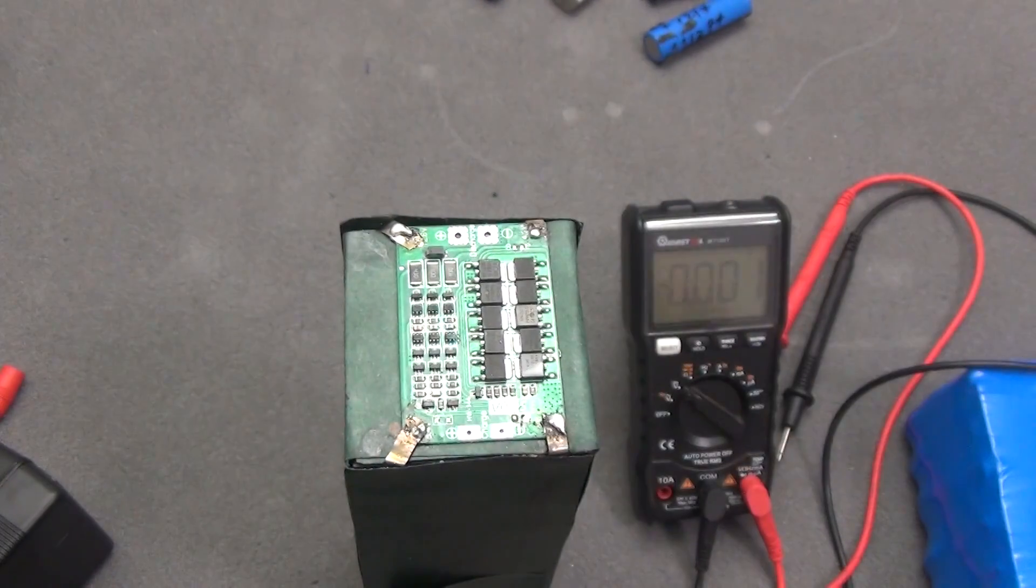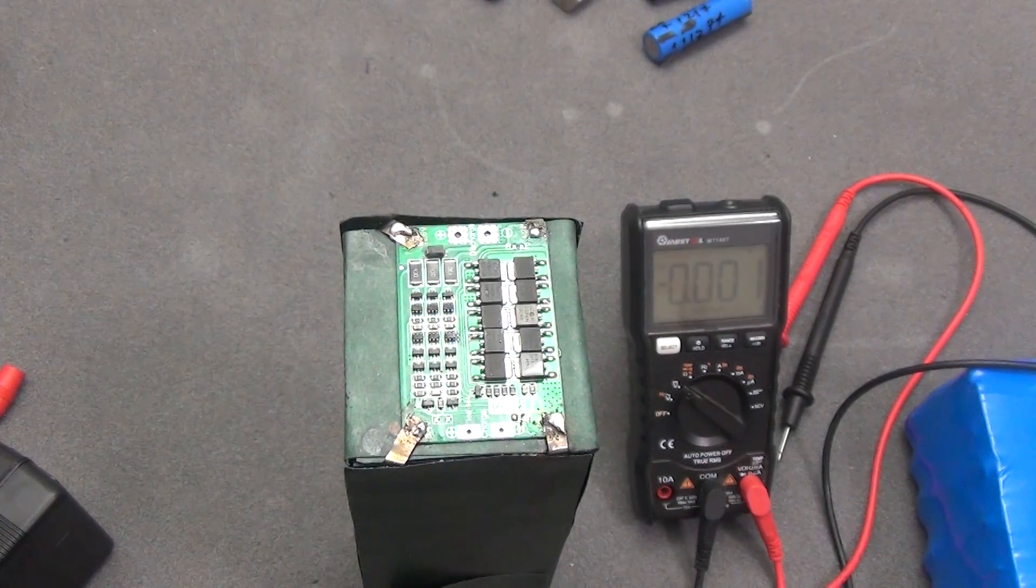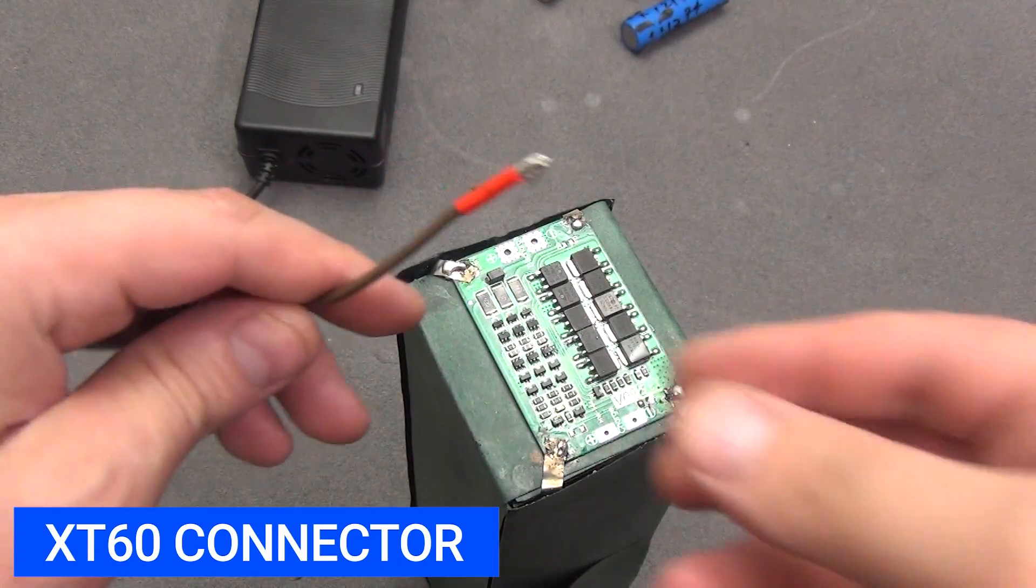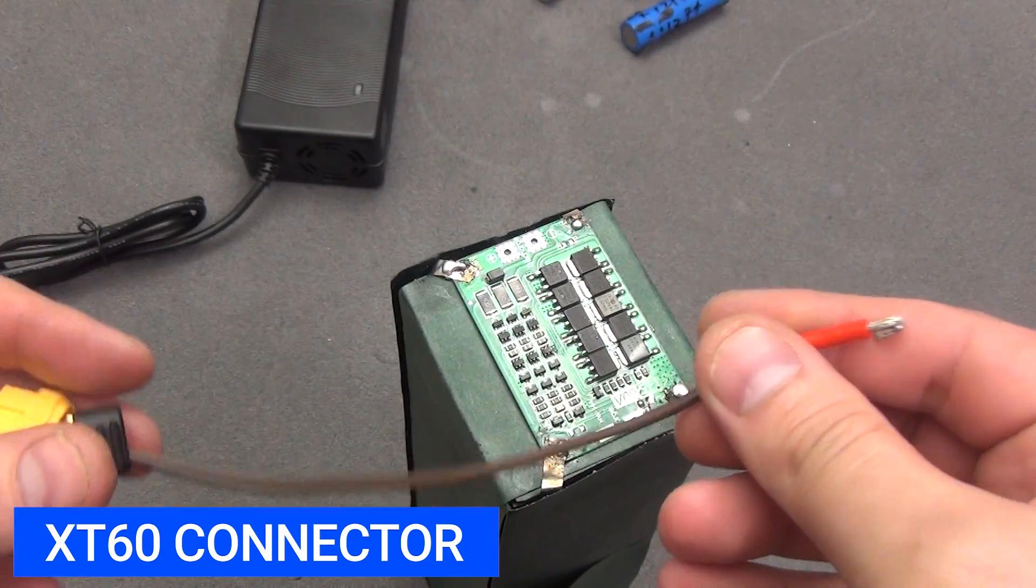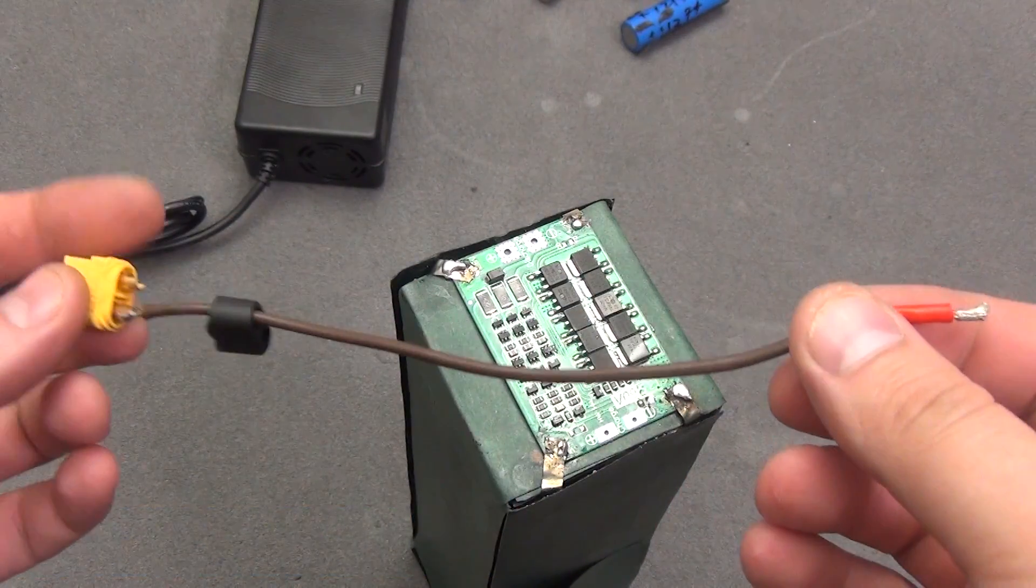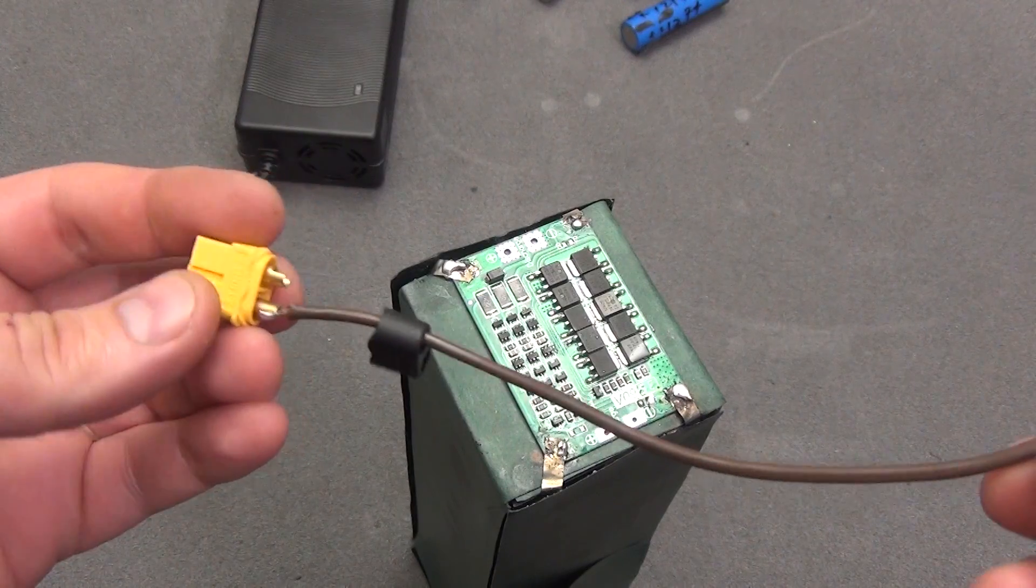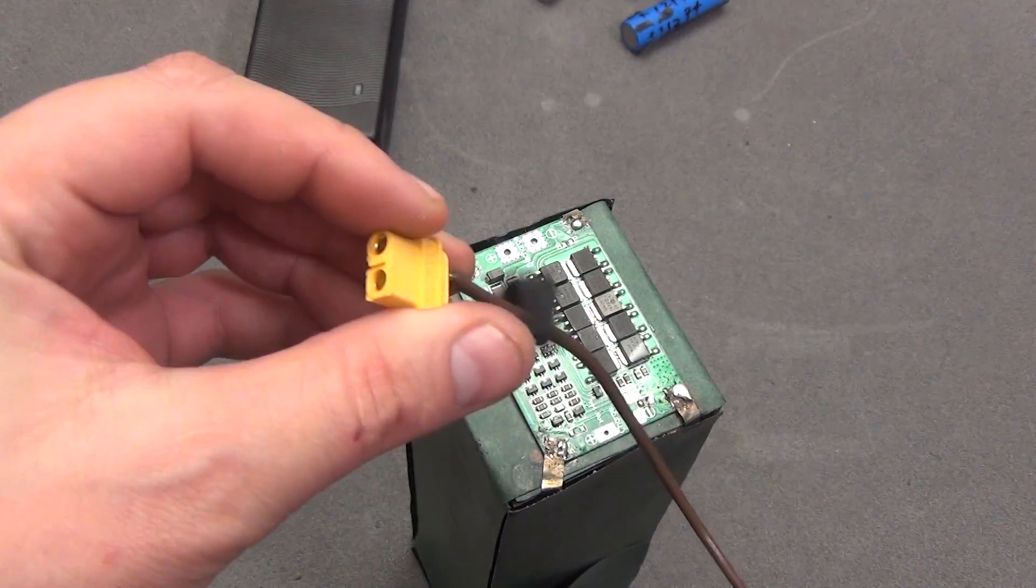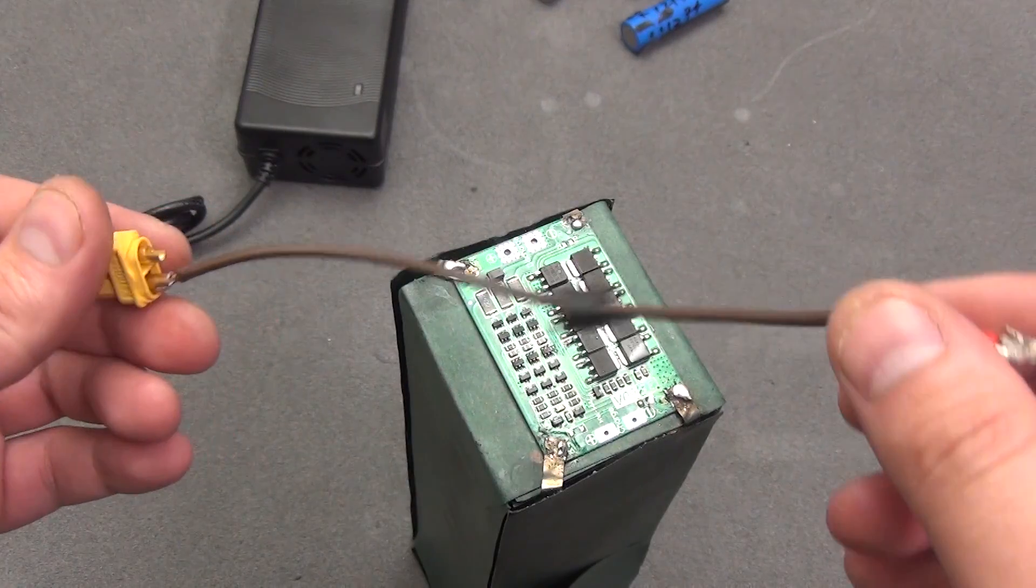We check that we should have 12.6 volts at the output. 12.53. Now I will solder a connector like this for charging. Two wires and connect them to a connector like this. This is the standard for our charger. And here I will solder thicker wires to connect the load.